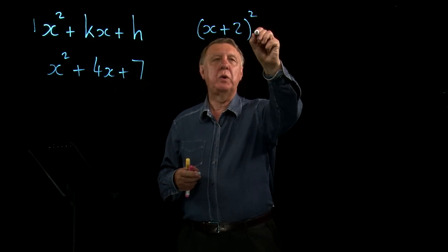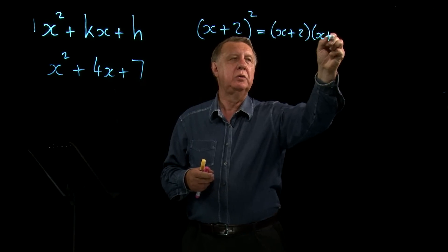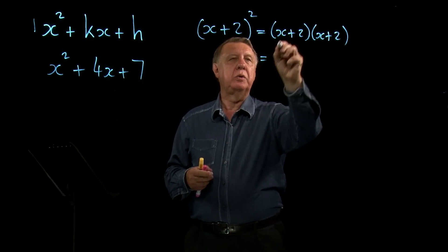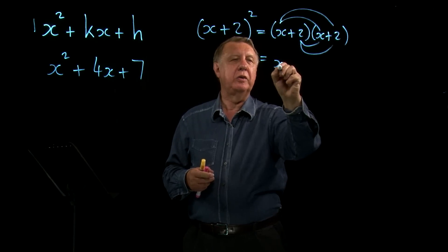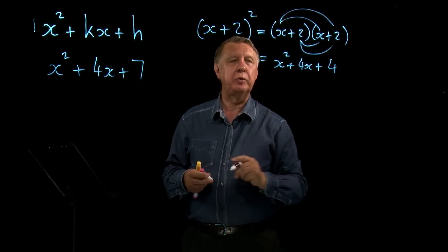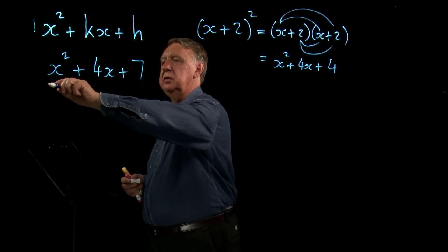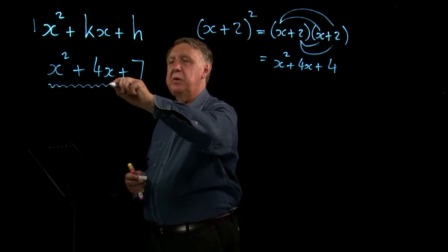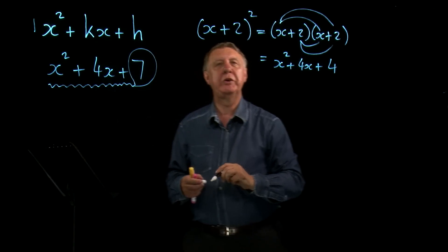If we do x plus 2 squared, we know that's x plus 2 times x plus 2. And again, the usual sort of thing, and let's hope that you could all get to x squared plus 4x plus 4. Now look across here. x squared plus 4x plus nearly the same, but not the same.